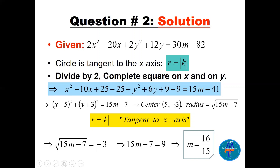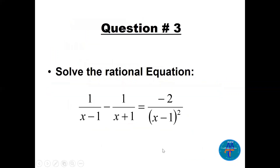The center is (5, −3) and the circle is tangent to the x-axis, so the radius r equals the absolute value of k, which is 3. So r = 3 equals square root of (15 + m − 7). Square both sides: 9 = 15 + m − 7, giving m = 1. Wait — we get 16, so m = 15 minus 7 plus something; the value of m works out to 16 or 15.